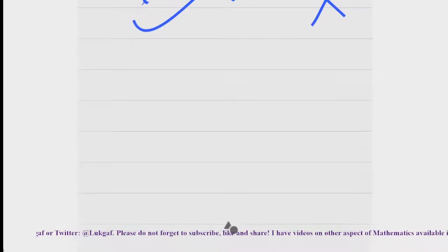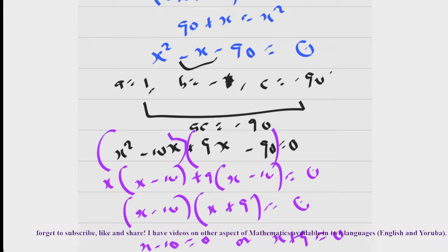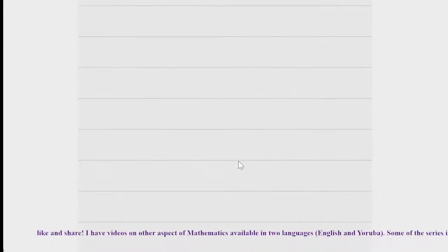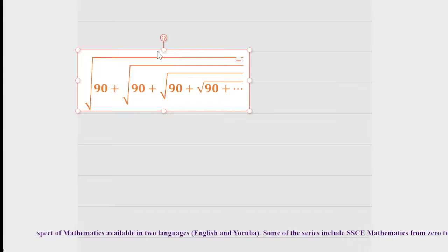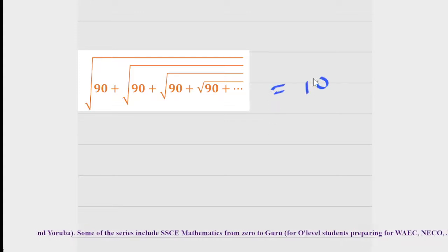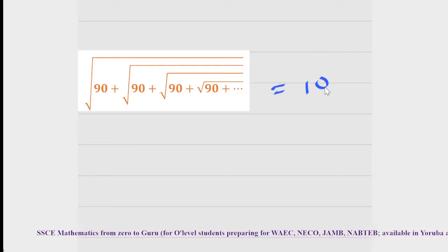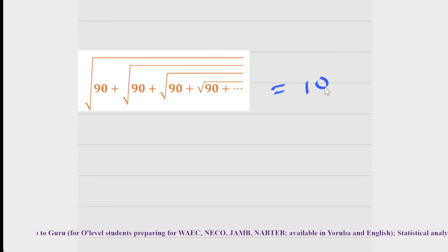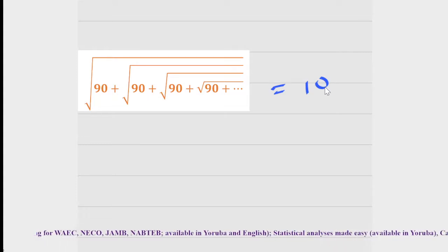Therefore, x equals 10. We can conclude that the square root of 90 plus square root of 90 plus square root of 90, continuing infinitely, equals 10. That's just it! If you understood, please don't forget to like, subscribe, and share with your friends. I will see you in the next video — thank you!